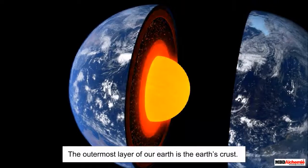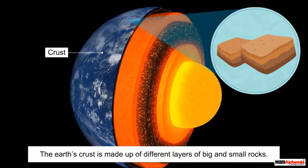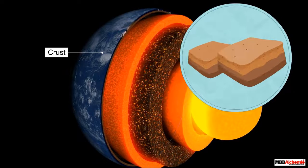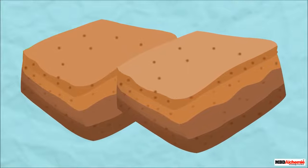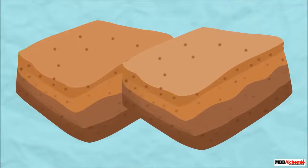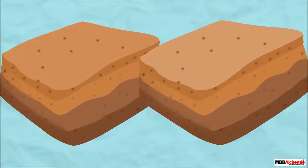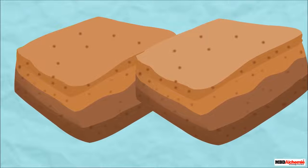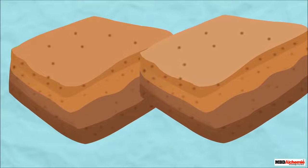The outermost layer of our Earth is the Earth's crust. It is made up of different layers of big and small rocks. These layers of rock are called plates. These plates continuously move, and while moving, they slide past one another or bump into each other. We often do not feel these plates moving because the movement is negligible.